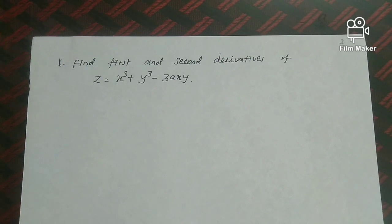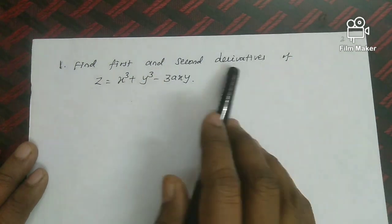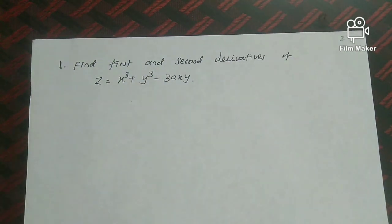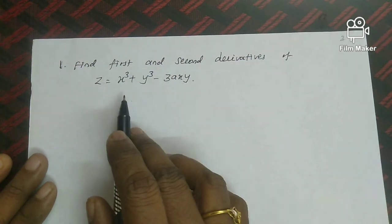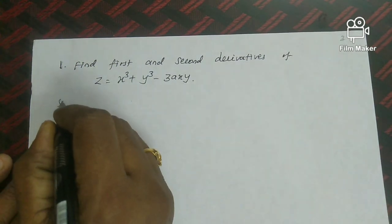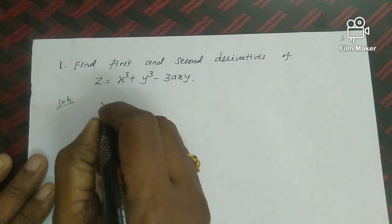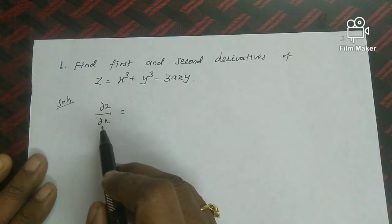Problem 1: Find the first and second partial derivatives of z = x³ + y³ - 3axy. The first derivatives are ∂z/∂x and ∂z/∂y. The second derivatives are ∂²z/∂x² and ∂²z/∂y².